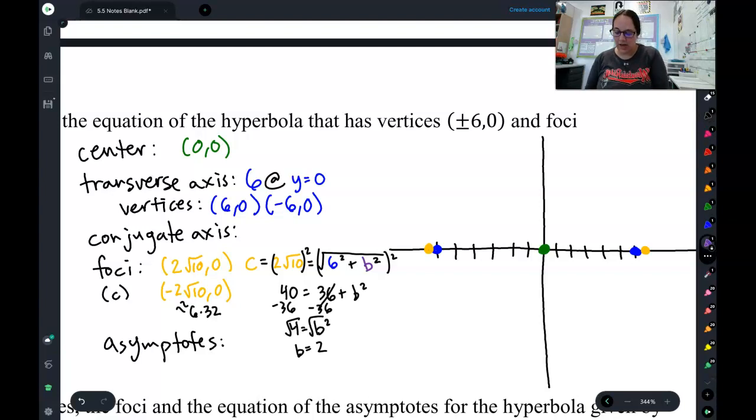So, my conjugate axis is going to be 2, and it's going to be in the opposite direction. I forgot to actually draw my transverse axis. And now that I've got that, I can do my guide rectangle through the vertices, through the conjugate axis.